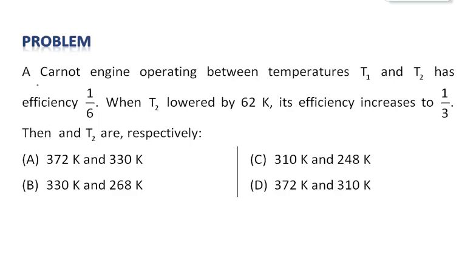A Carnot engine operating between temperatures T1 and T2 has efficiency 1/6. When T2 is lowered by 62 Kelvin, its efficiency increases to 1/3. Then T1 and T2 are, respectively: